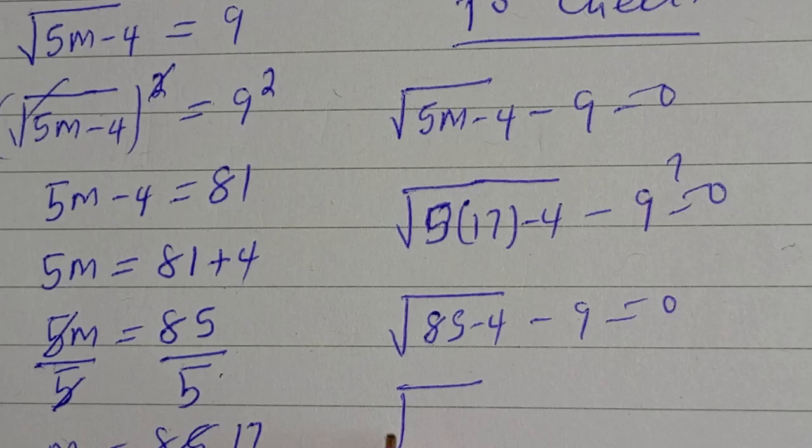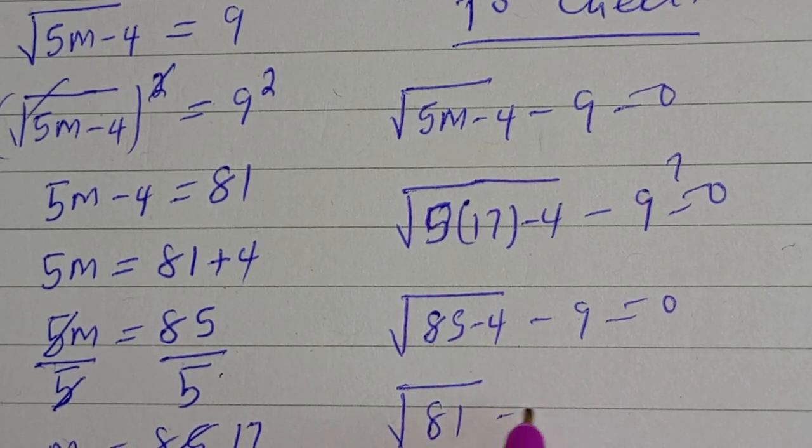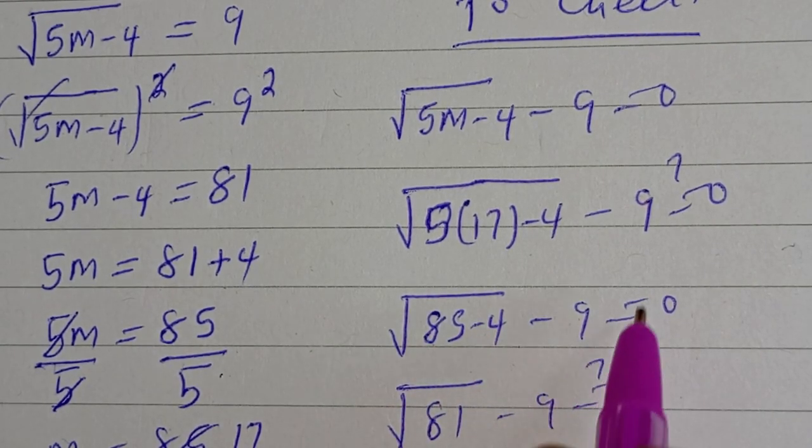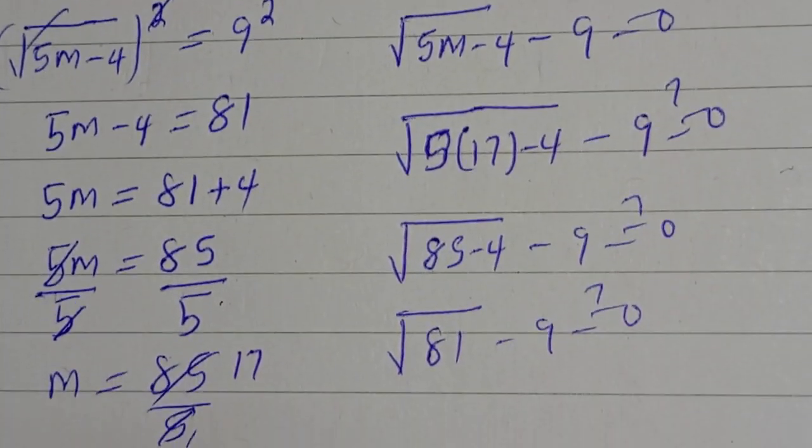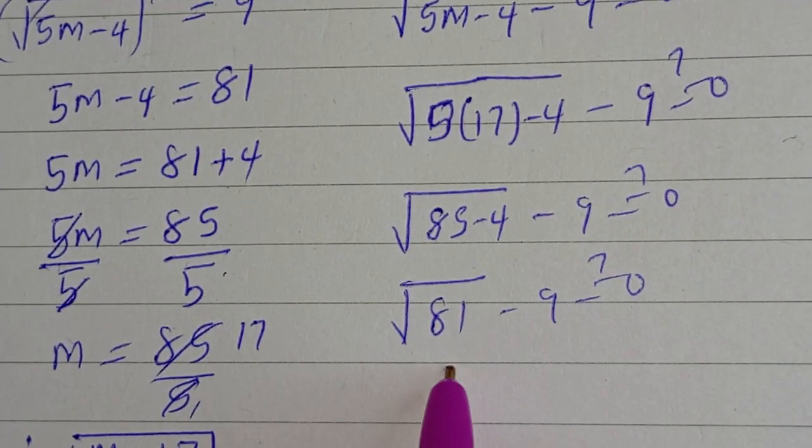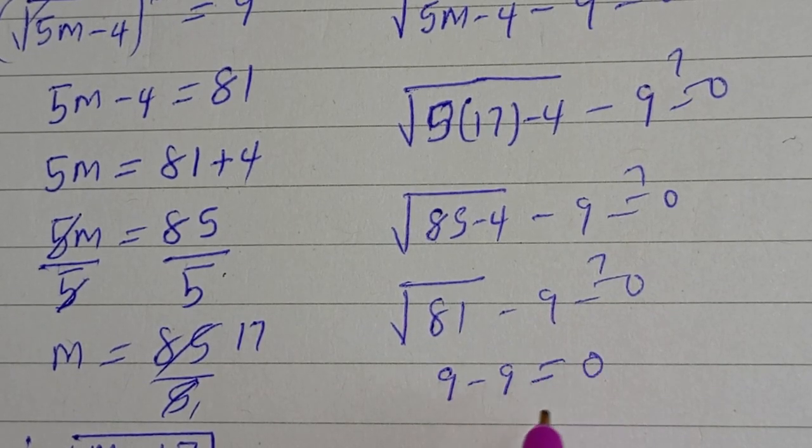Square root of 85 minus 4, that is 81 minus 9, must be equal to 0. Then square root of 81 is 9 minus 9. This is equal to 0.